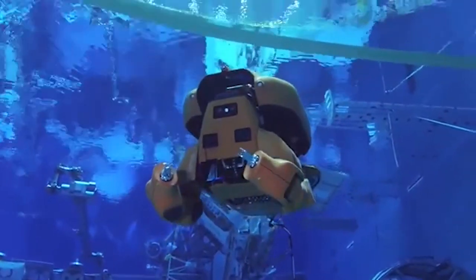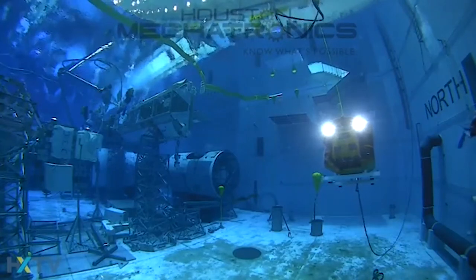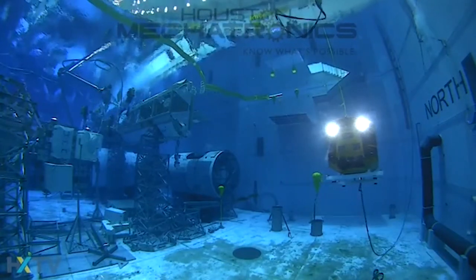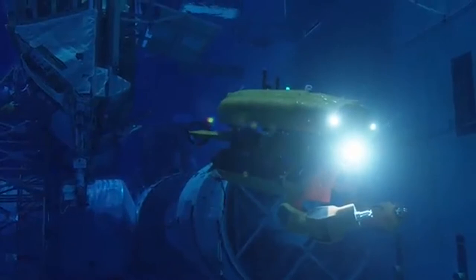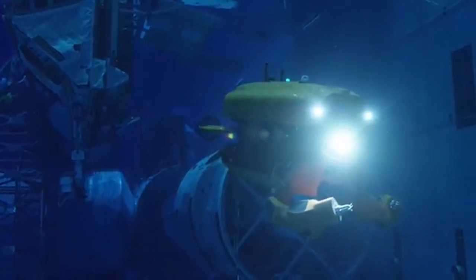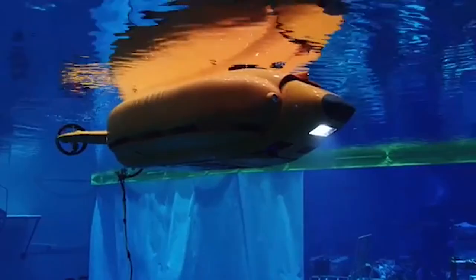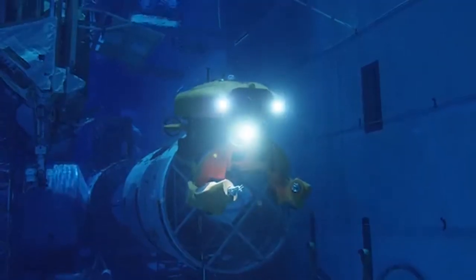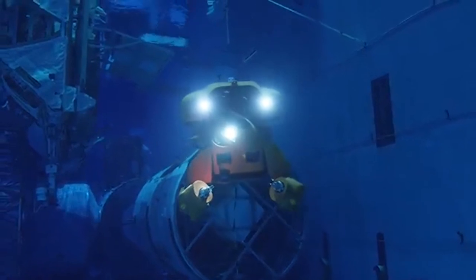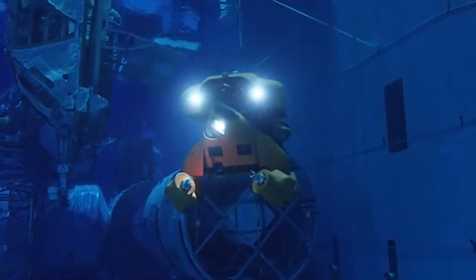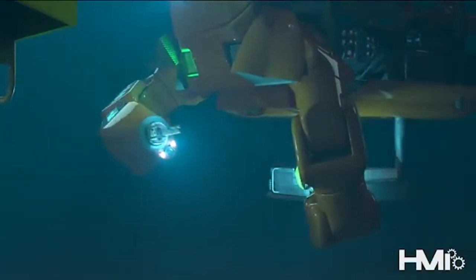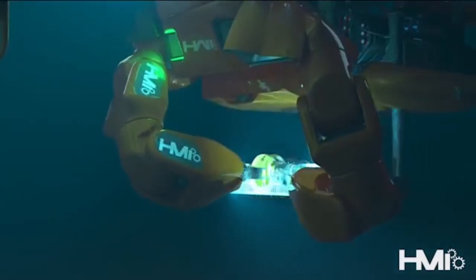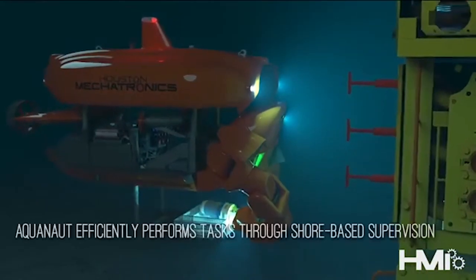While it can perform entire missions in excursion mode, the Aquanaut can also transition into work-class mode upon reaching a predetermined destination. When it does so, its hull opens up to expose two additional vectored thrusters, two 8 degrees of freedom electric manipulator arms, and a payload bay. Its sensing head also gains another degree of freedom, allowing it to pitch and roll in order to maintain a good view of the task it's performing.